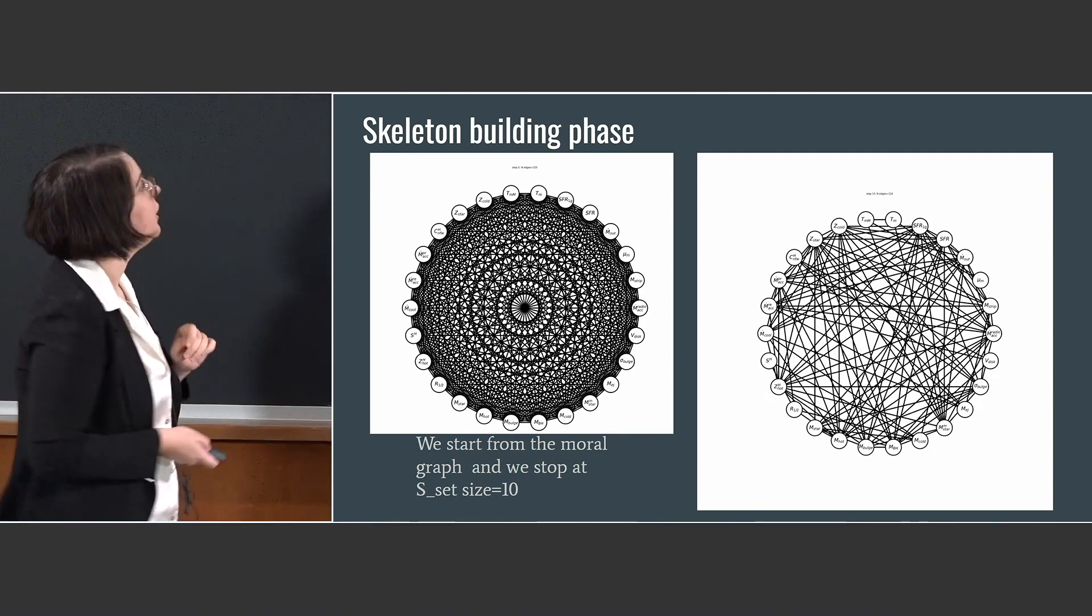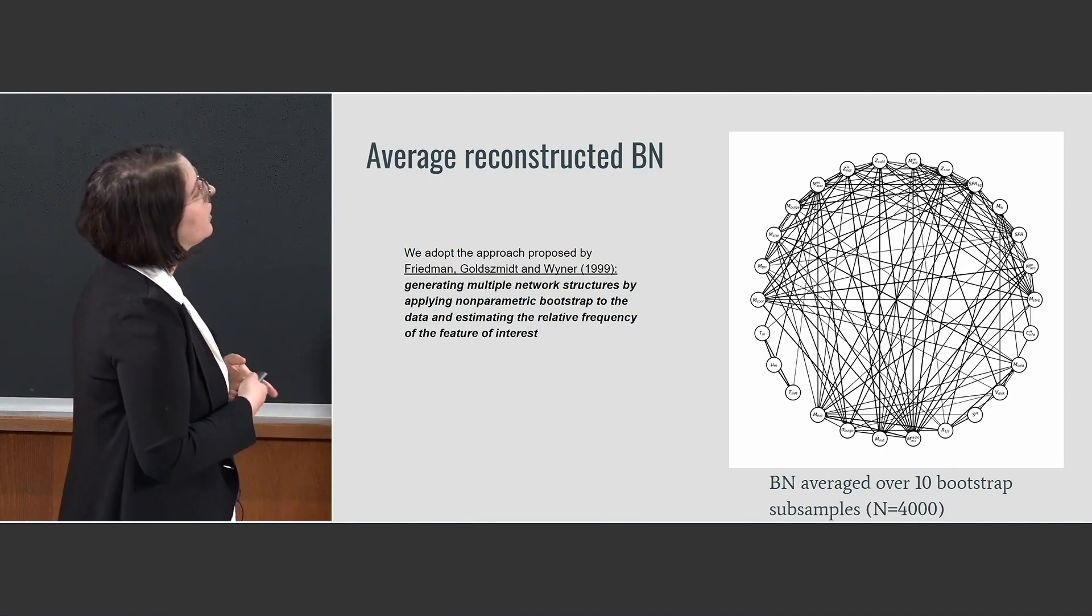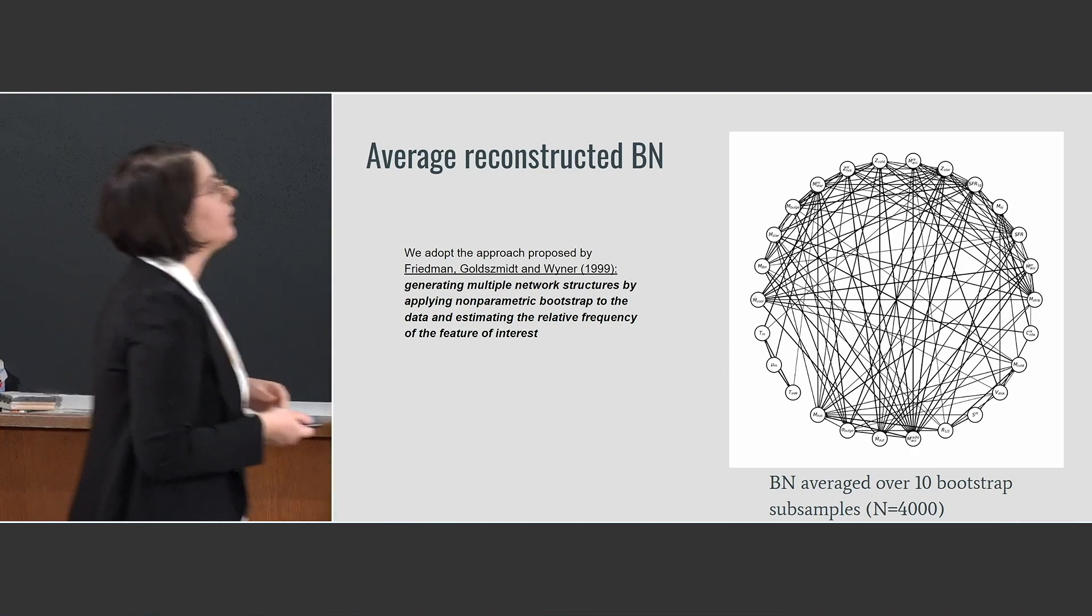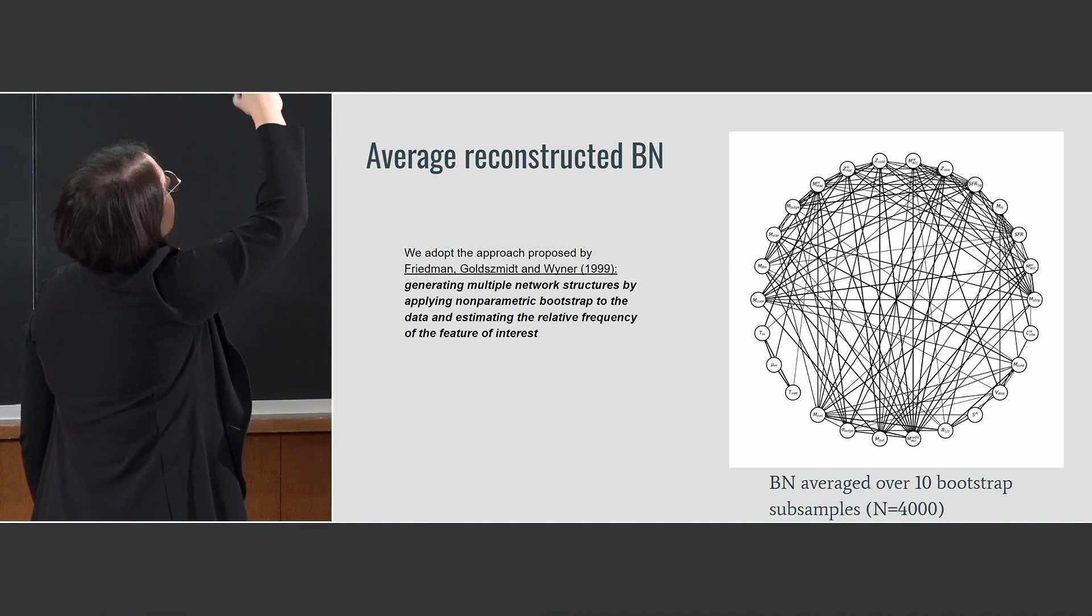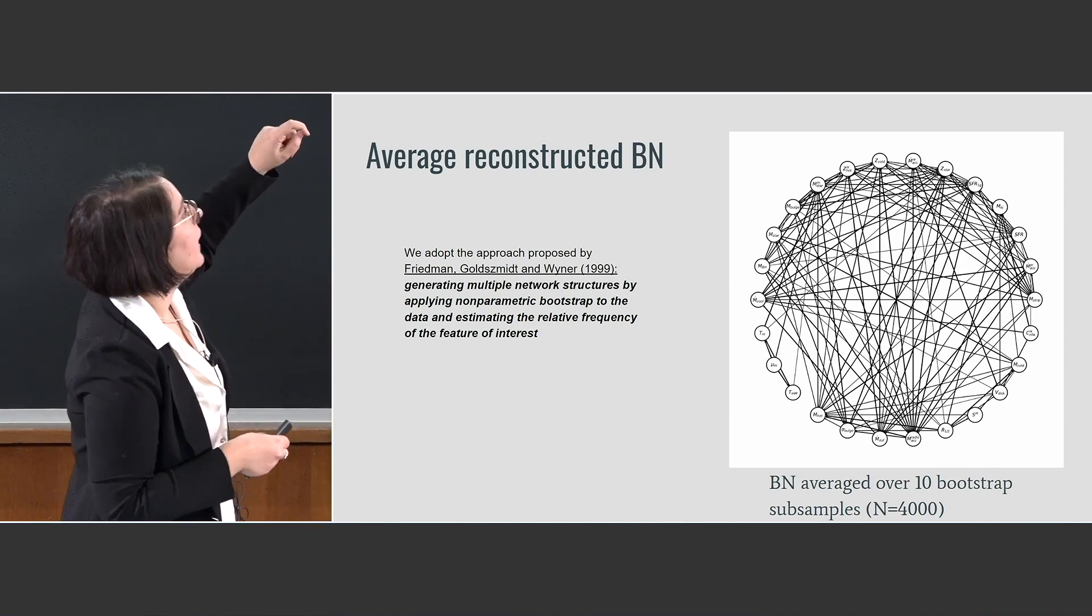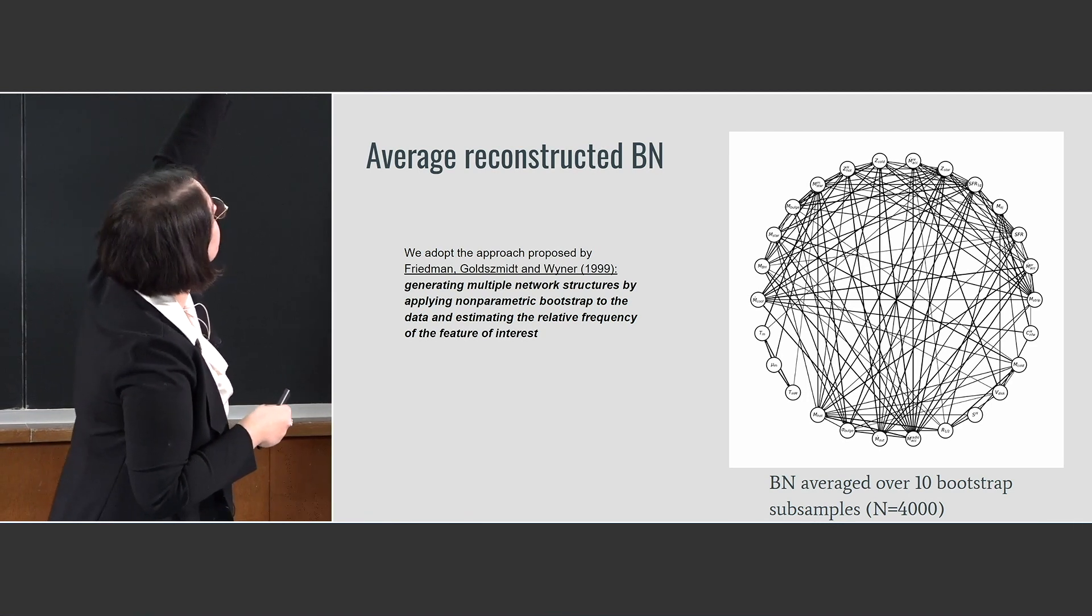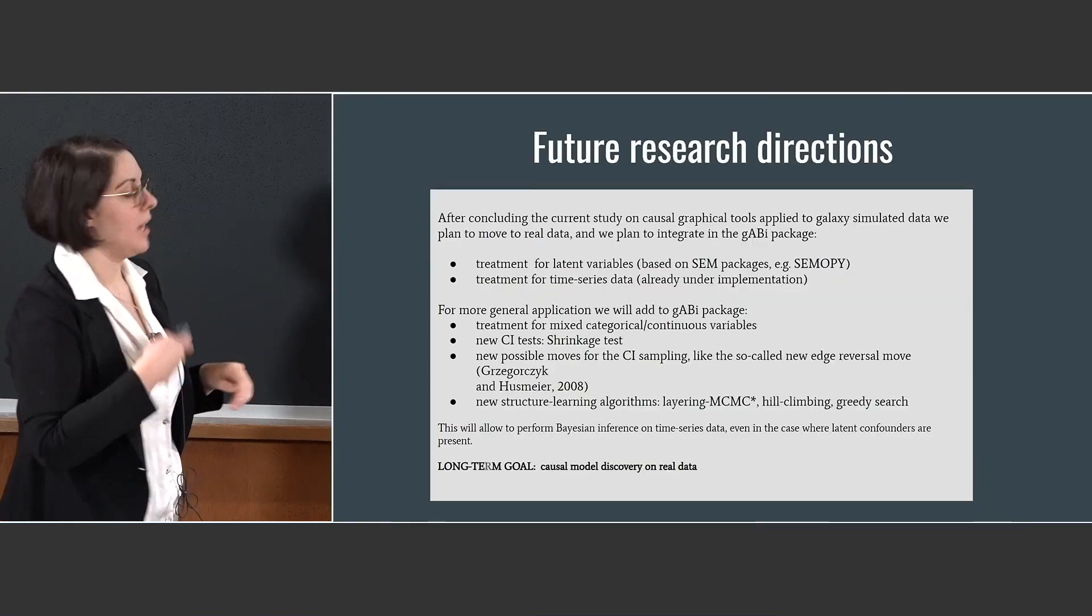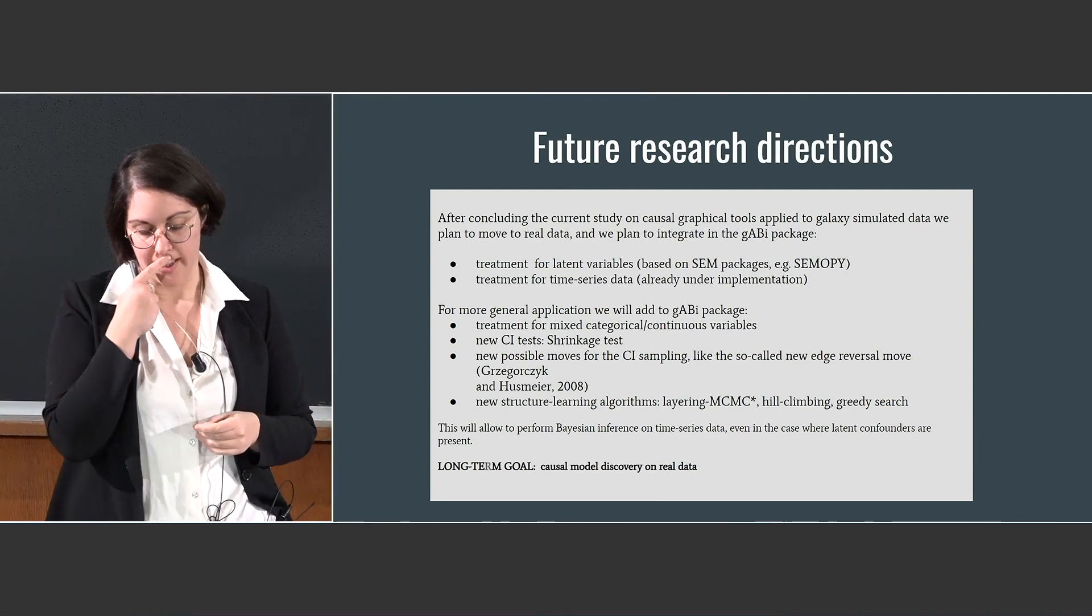And through the iteration of the first phase of the algorithm we arrived to have a skeleton of only 120 edges that you can see here on the right. And we then averaged the reconstructed Bayesian network over 10 bootstraps with the sample size of 4000, and we arrived to this graph. In particular we can see there are edges with different widths that is connected to the strength of the conditional relationship. And we have only like three causes of the half-mass radius that are the halo spin and the cold mass, and we have a relation with the disk. So we arrived to this reconstructed Bayesian network.